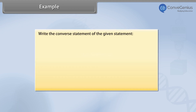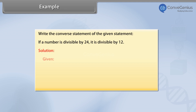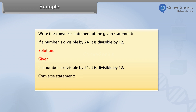Example. Write the converse statement of the given statement: If a number is divisible by 24, it is divisible by 12. Solution. Given: If a number is divisible by 24, it is divisible by 12. Converse statement: If a number is divisible by 12, then it is divisible by 24.